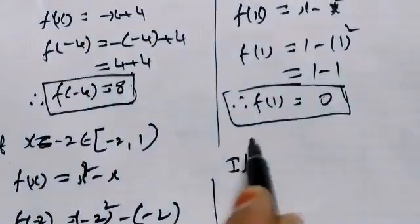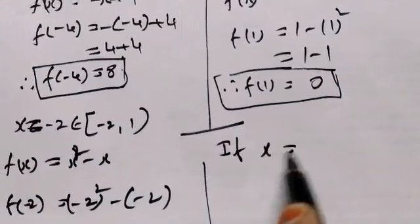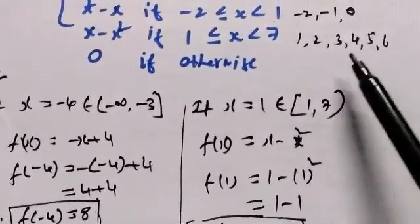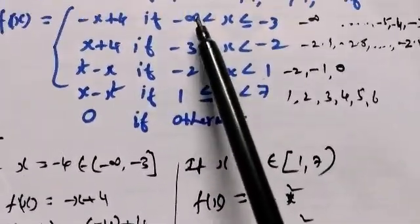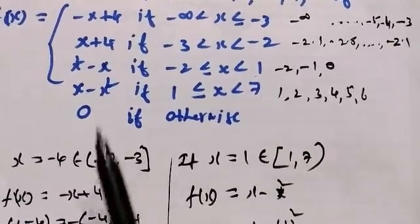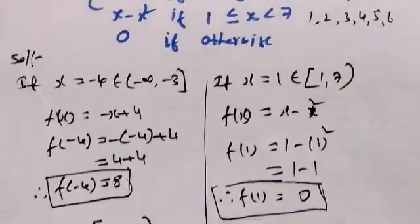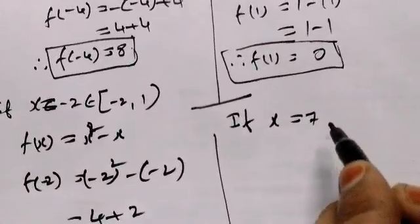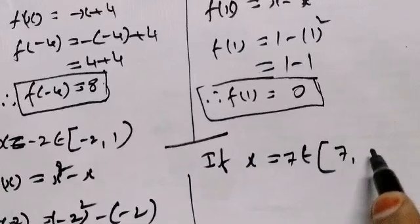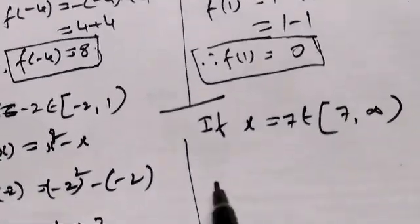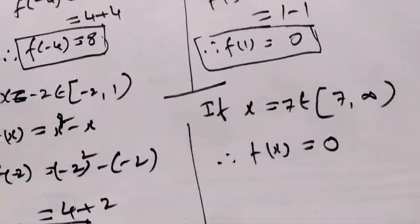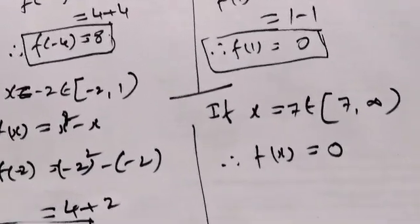So next, if x is equal to 7, where does 7 fall? If x equal to 7, that is negative, then minus 7 is equal to 0, and it falls in the closed-open interval 7 to plus infinity. So the function is 0.